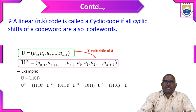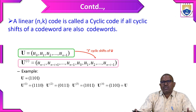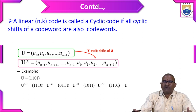A linear (n, k) code is called a cyclic code if all cyclic shifts of a codeword are also codewords. This is why we use shift registers. The register contains flip-flops, and flip-flops can store one bit at a time. For every clock tick, data moves from one flip-flop to another flip-flop — that is what is done in the feedback shift register.